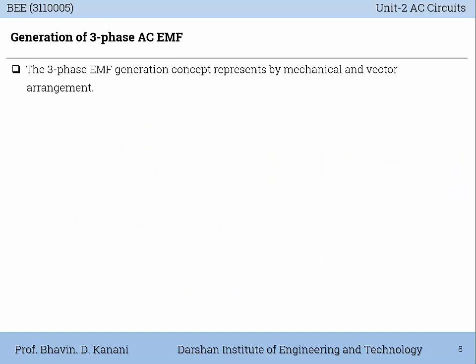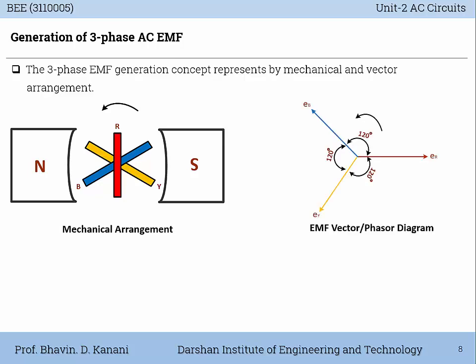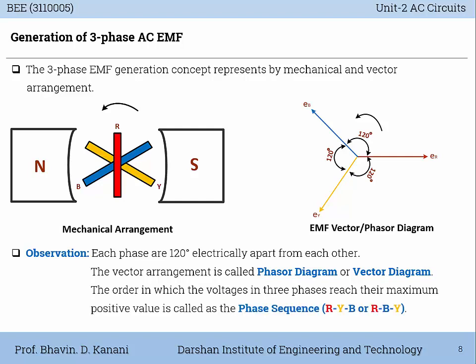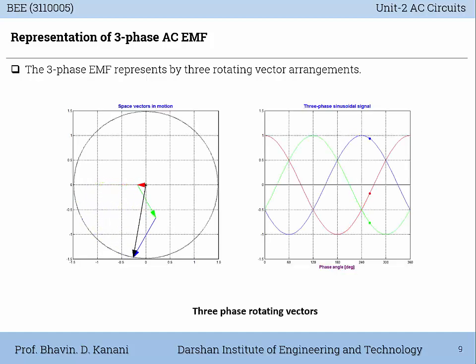The three-phase EMF generation concept is represented by mechanical and vector arrangements. This diagram shows the mechanical arrangement of R, Y, B windings in the generator. The right-hand side figure represents the vector or phasor diagram — it is the electromagnetic waves where each phase is 120 degrees electrical apart from each other. This vector arrangement is called a phasor diagram or vector diagram. The order in which the voltages in three phases reach their maximum positive value is called the phase sequence — it may be in RYB terms or in RBY sequence.